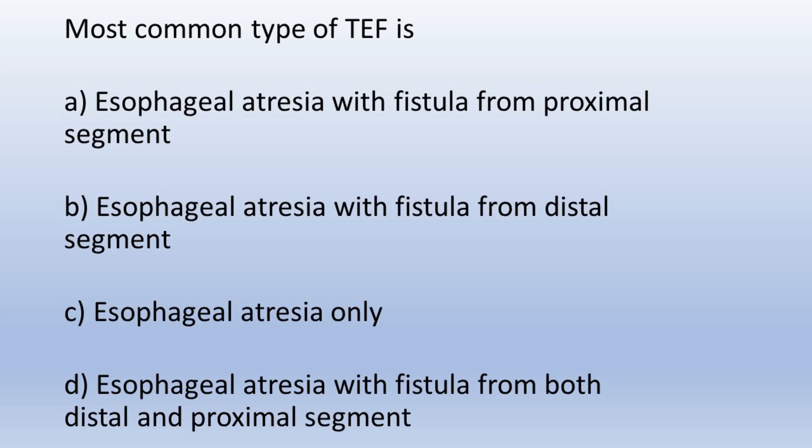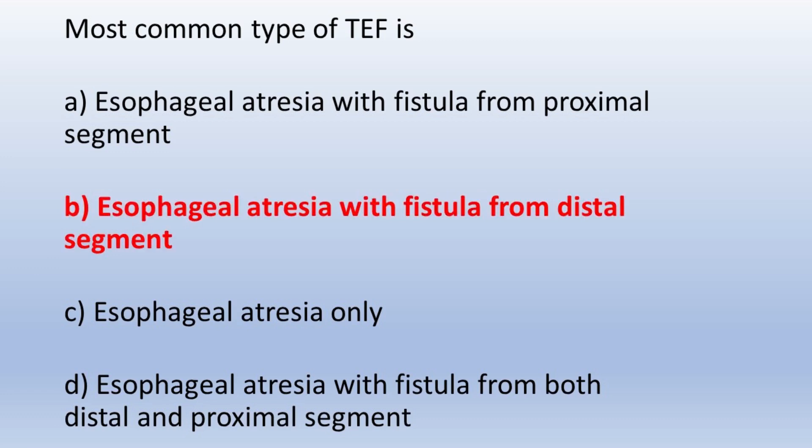Let's solve this MCQ. The most common type of tracheoesophageal fistula is: option A — esophageal atresia with fistula from proximal segment; option B — esophageal atresia with fistula from distal segment; option C — esophageal atresia only; option D — esophageal atresia with fistula from both distal and proximal segment.